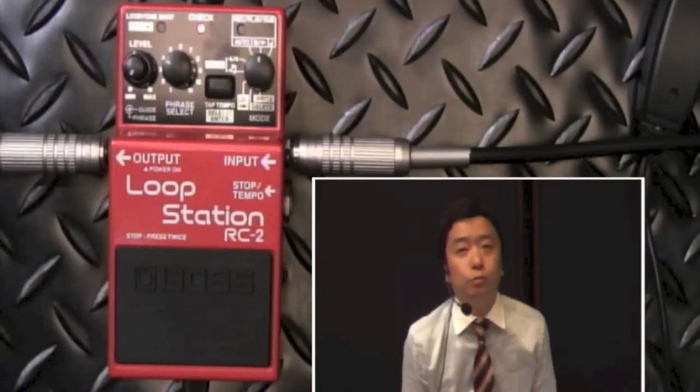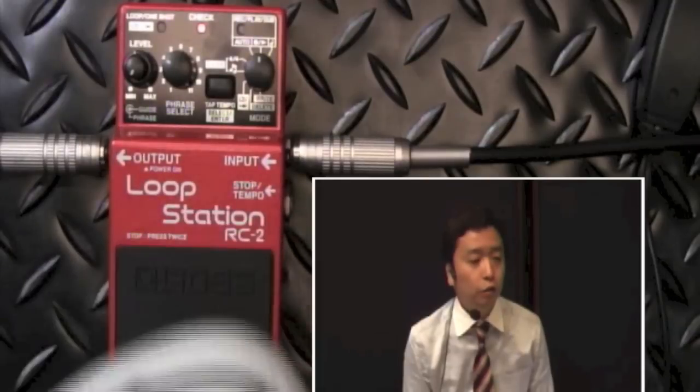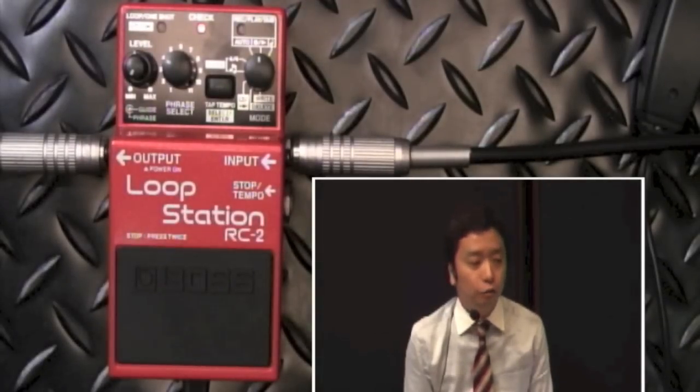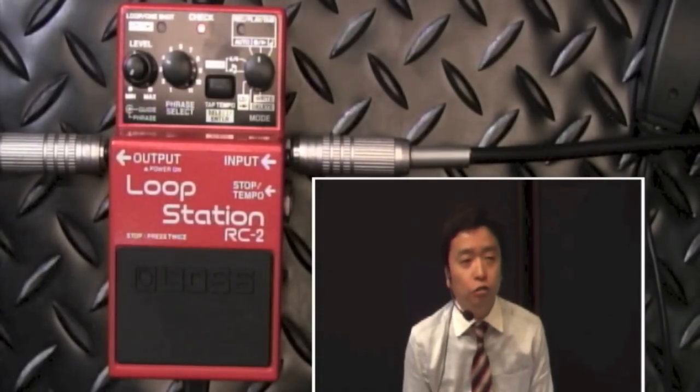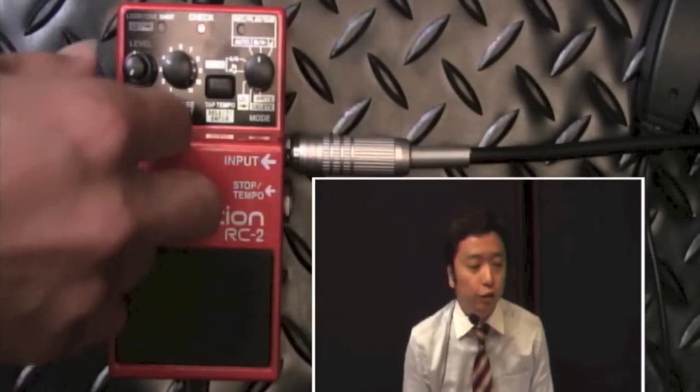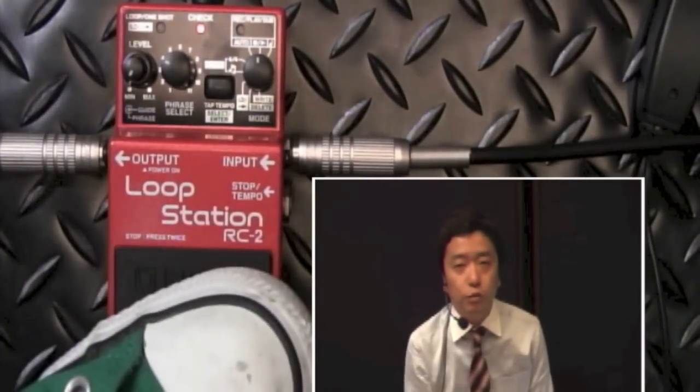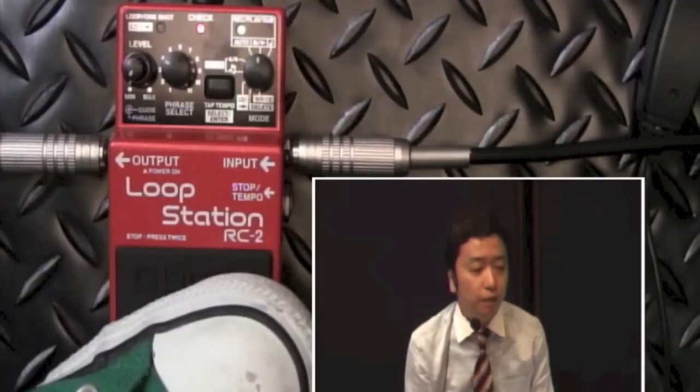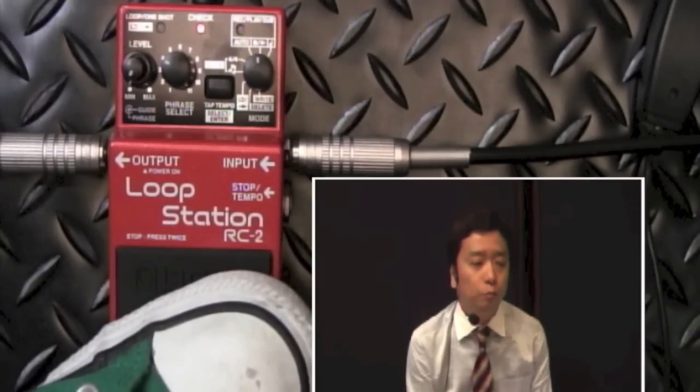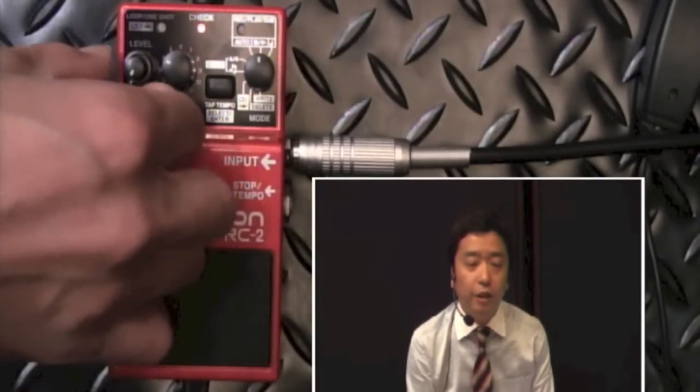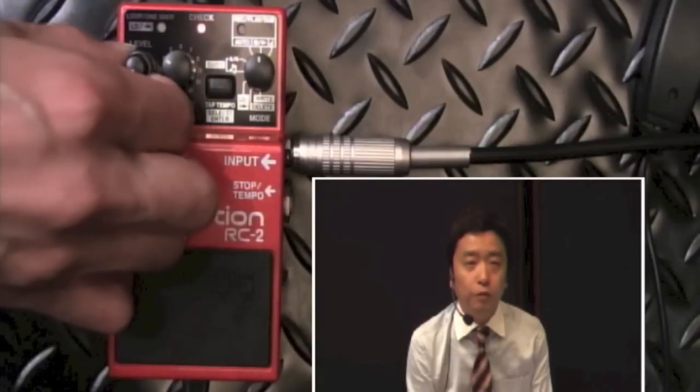BOSS RC-2 loop station, I'm going to show you the sound. RC-20, RC-20XL - this pedal was released as a loop station. It was very compact and I was able to use the BOSS compact effector format.